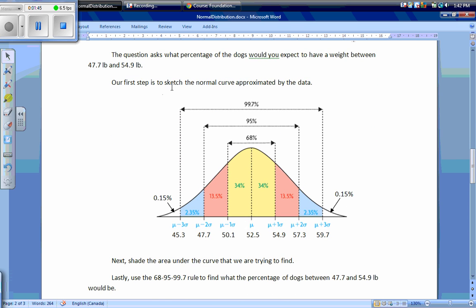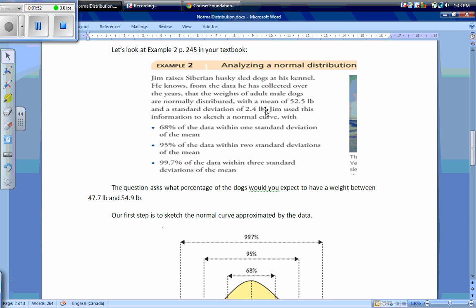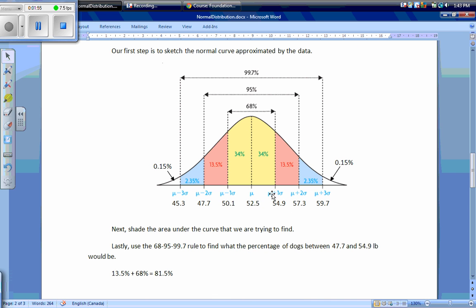Our first step is to sketch the normal curve approximated by the data. I have my mean of 52.5 pounds and my standard deviation of 2.4 pounds. My mean plus 1 standard deviation will be 54.9 pounds, my mean plus 2 standard deviations will be 57.3, and our mean plus 3 standard deviations will be 59.7. Likewise, our mean minus 1 standard deviation works out to 50.1, and we consider that all of these will follow in the same pattern.